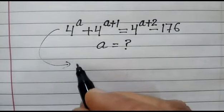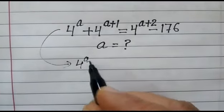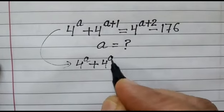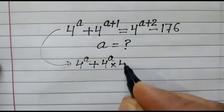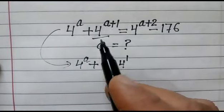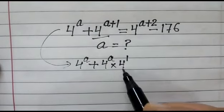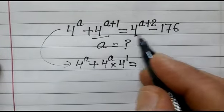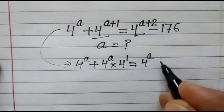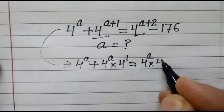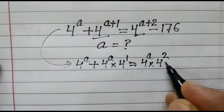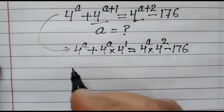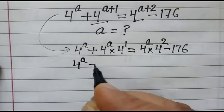So, 4 to the power a plus 4 to the power a into 4 to the power 1. We can break 4 to the power (a+1) as 4^a · 4^1, and 4 to the power (a+2) as 4^a into 4 to the power 2, minus 176.